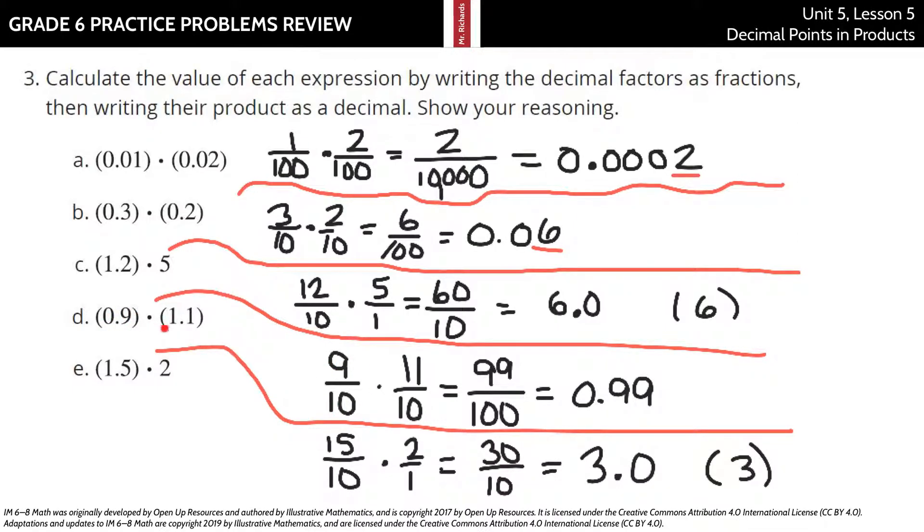Nine-tenths times, this is one point one, one and one-tenths, which is really the same thing as eleven-tenths. Nine times eleven is ninety-nine. Ten times ten is a hundred, so you have ninety-nine hundredths.